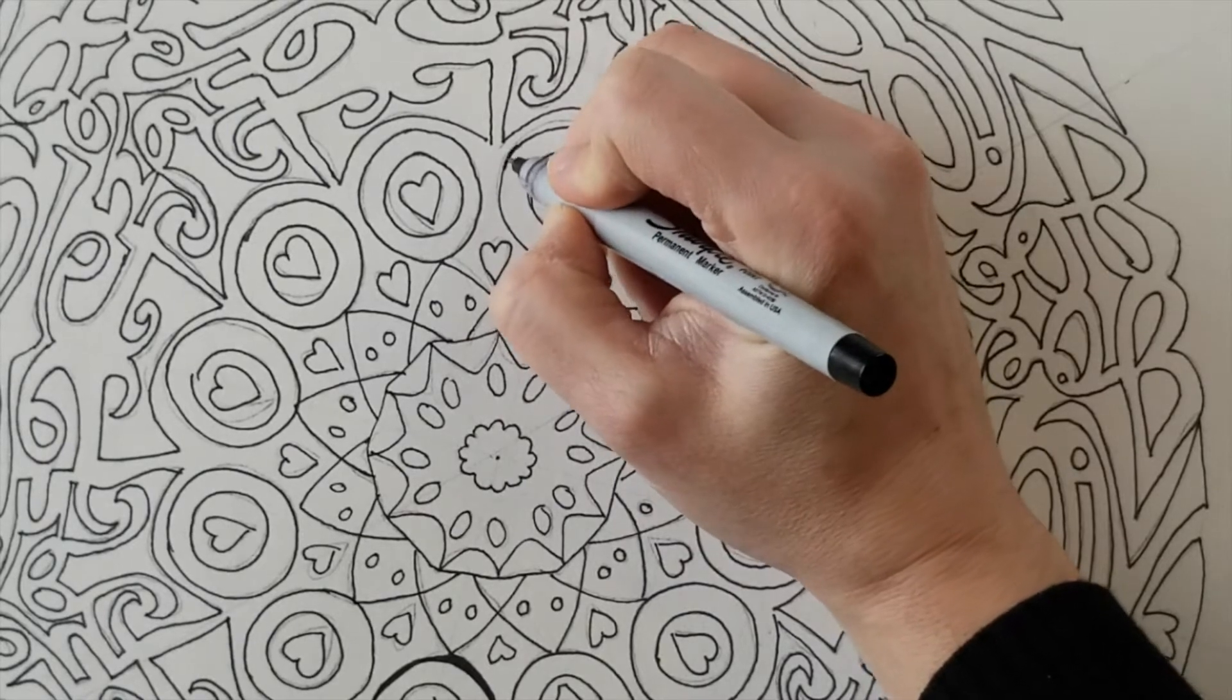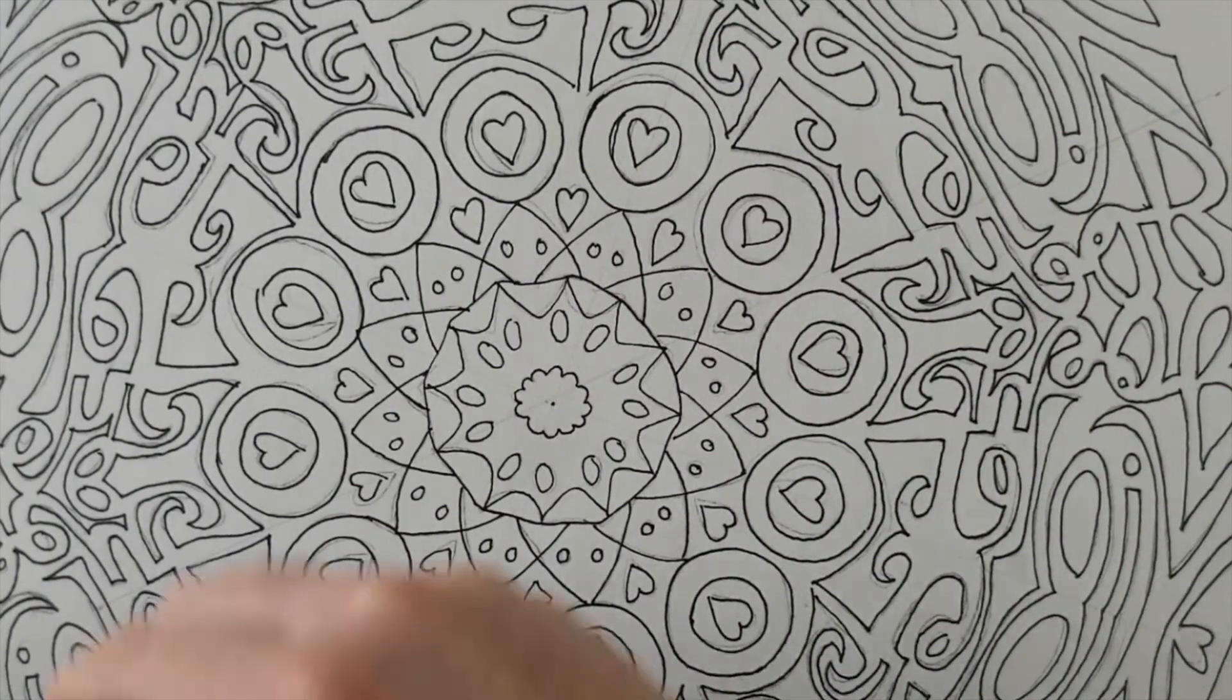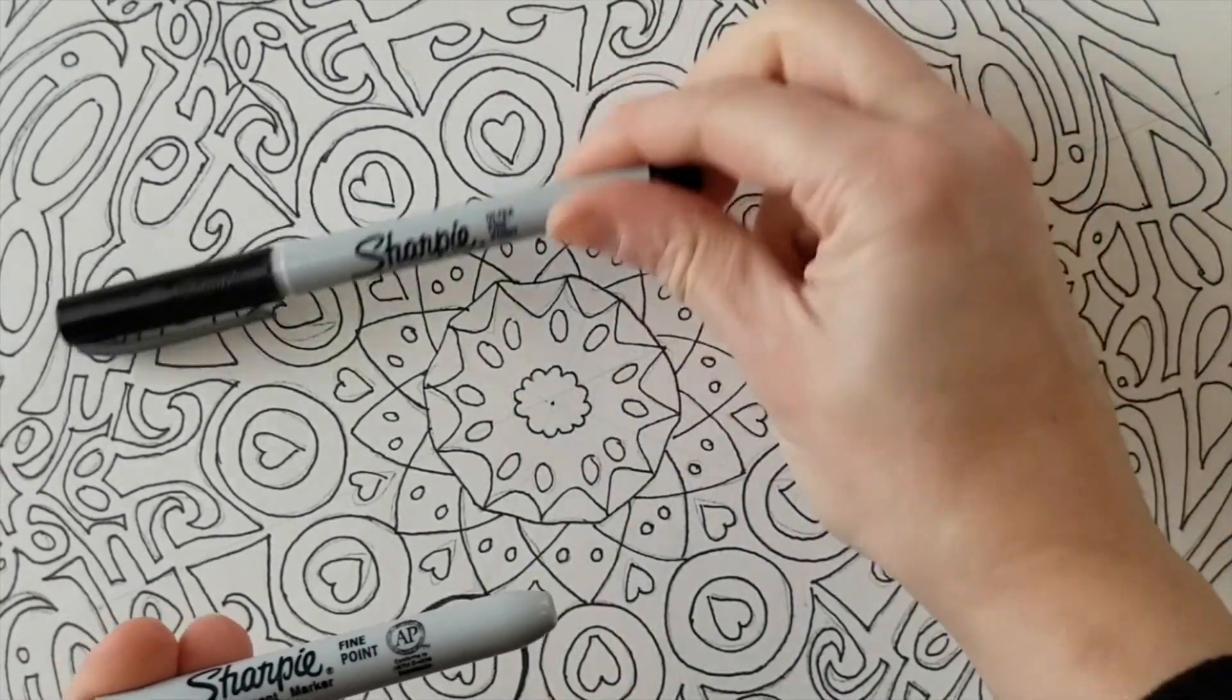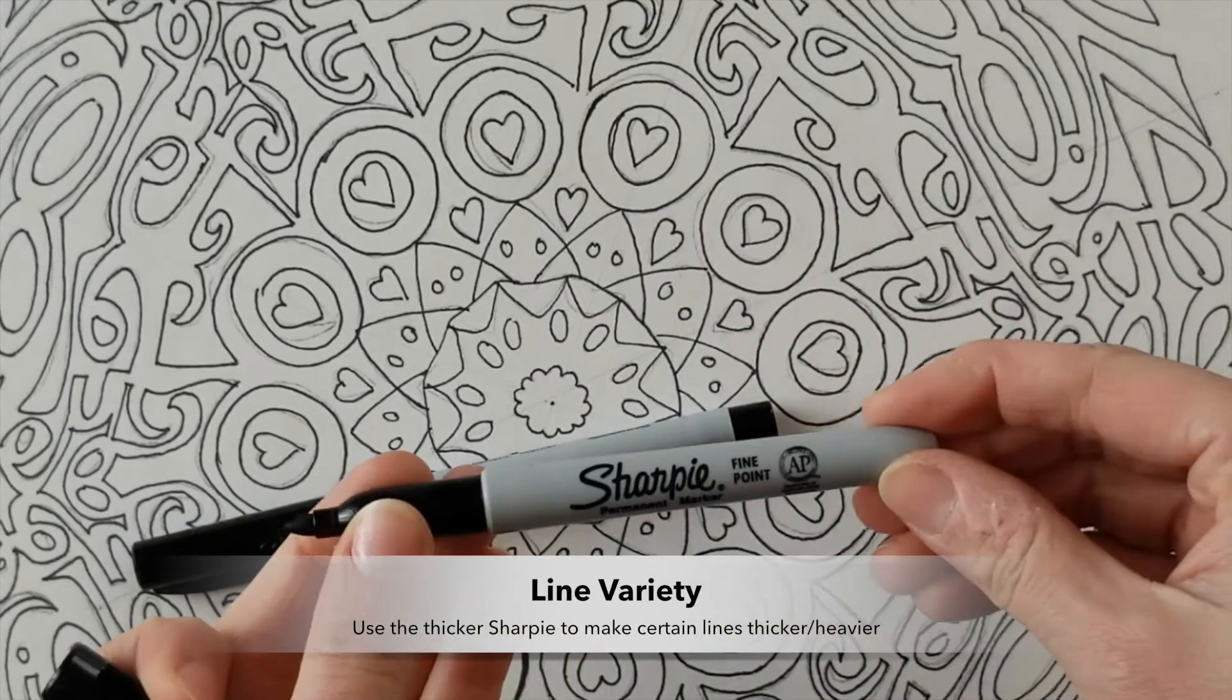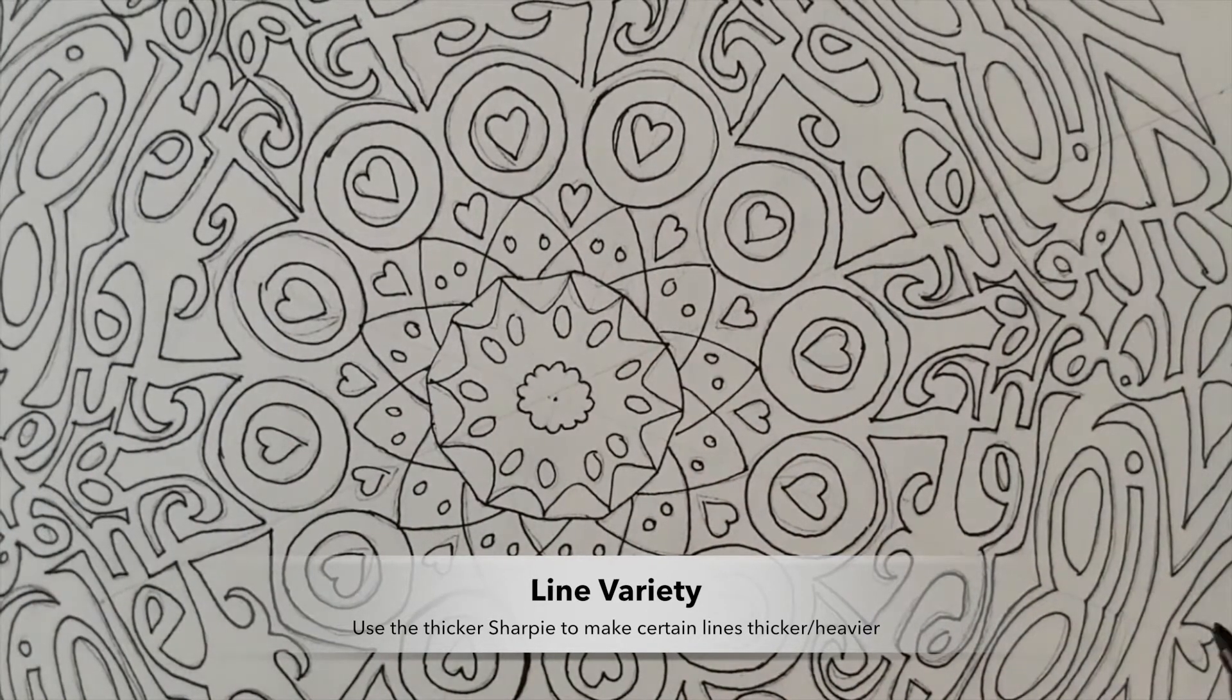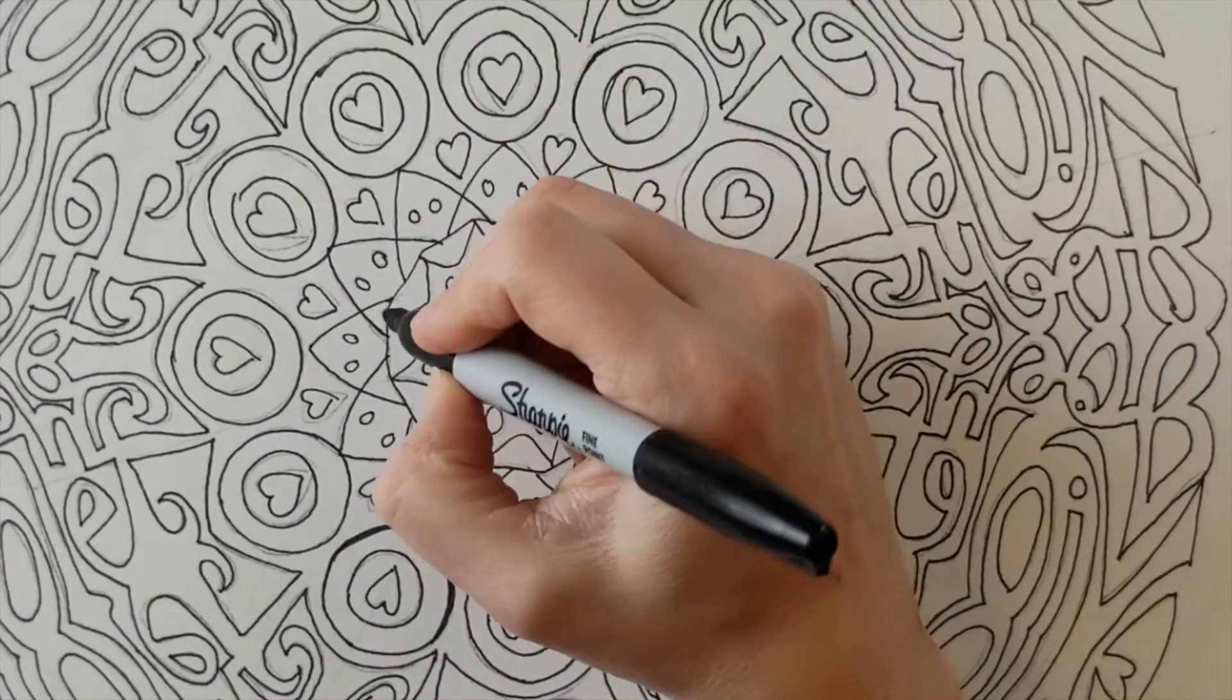You guys can also switch to use your bigger sharpie. So this is the ultra fine that we used for most of our piece, you guys can also use the fine point sharpie which is a little bit thicker. So if there's an area of your composition that you want to have a thicker line, like maybe I want this outline here to be a little bit more pronounced, so I can just go over that with the thicker sharpie.